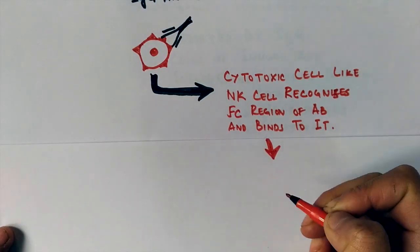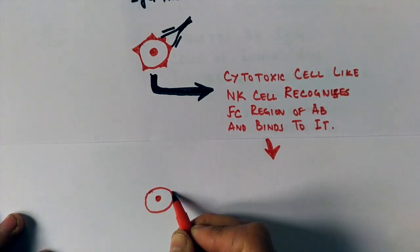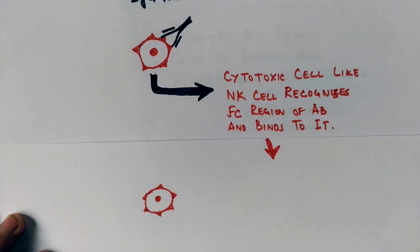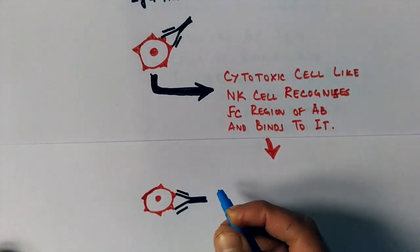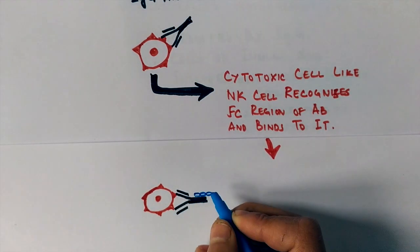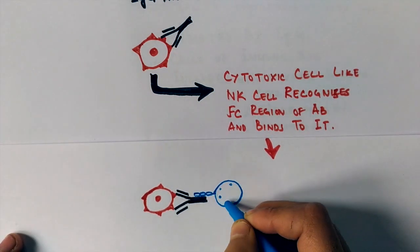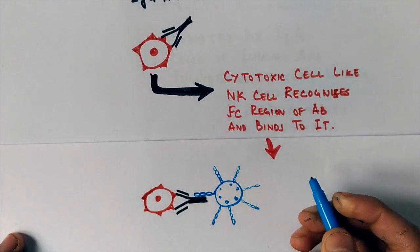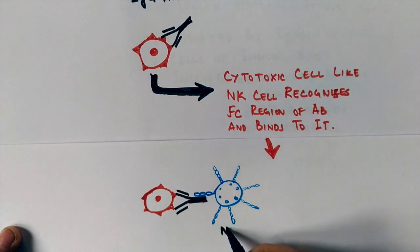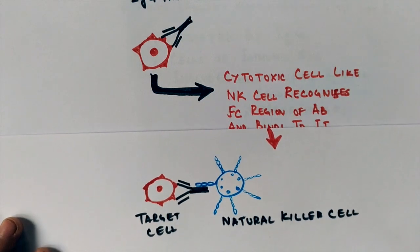So here we see the target cell with surface antigens. On the surface antigens, the antibody is bound towards it. Now natural killer cell comes here and binds towards the target cell through CD16 region. The CD16 region has the capability to recognize the Fc region of antibody and binds to it.